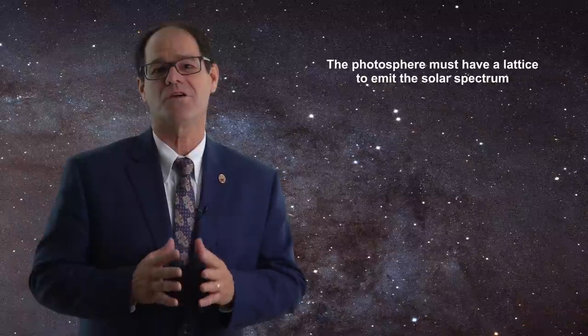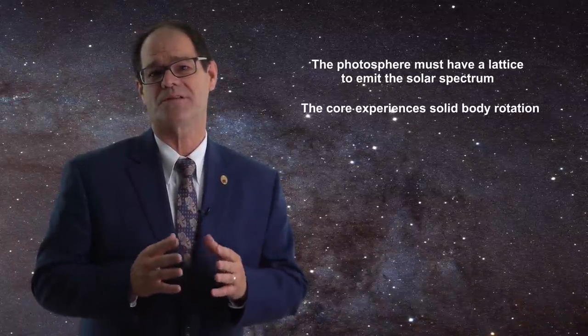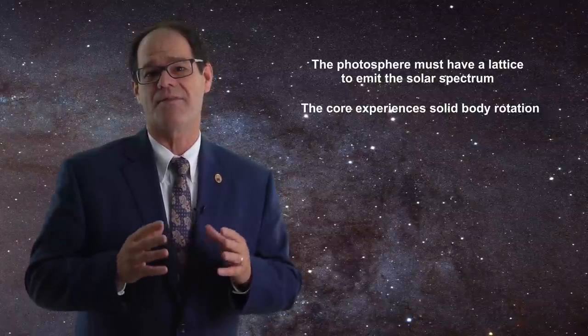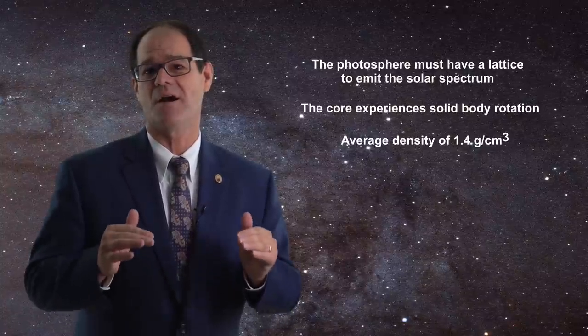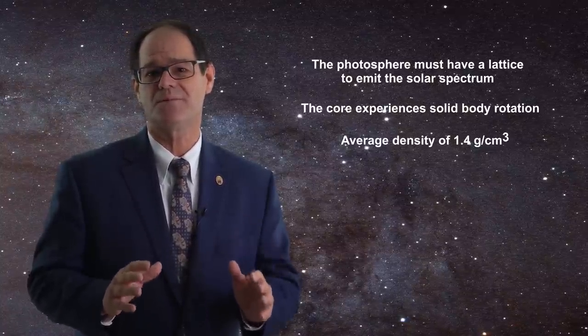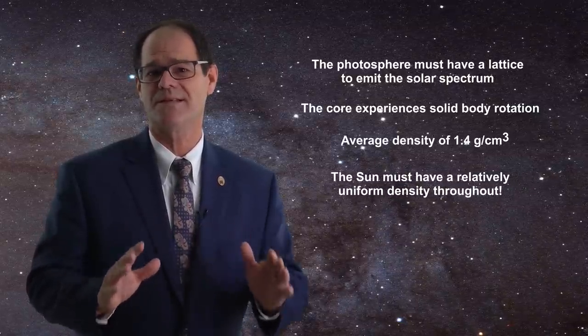Given that the photosphere must have a lattice for thermal emission, that the core experiences solid body rotation, and that an average density of 1.4 grams per centimeter cube exists, the only feasible material distribution is that the Sun must have a relatively uniform density throughout.